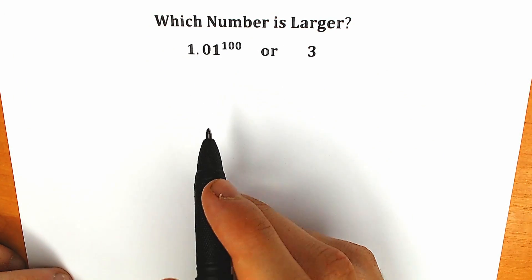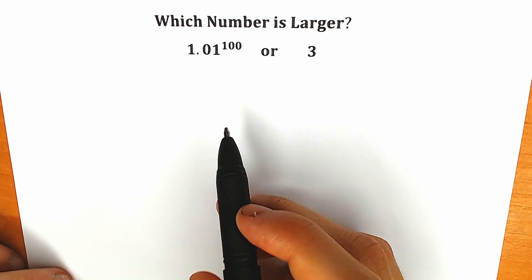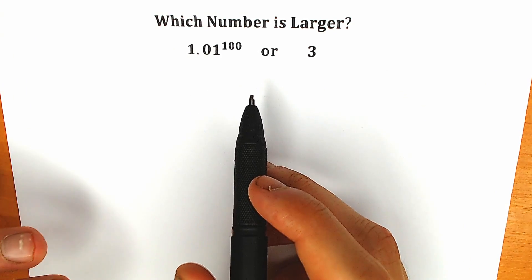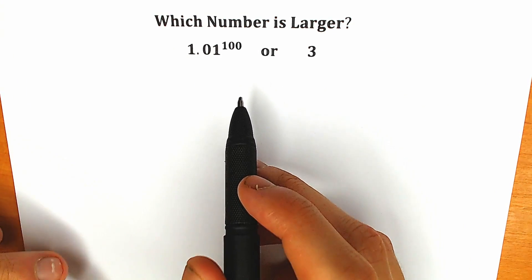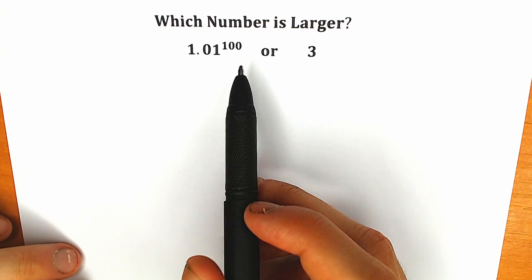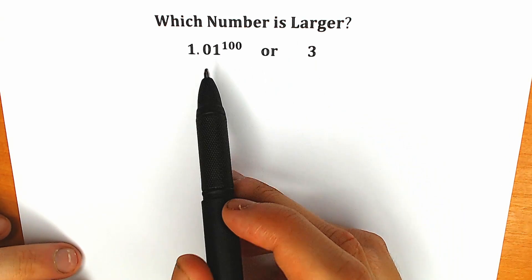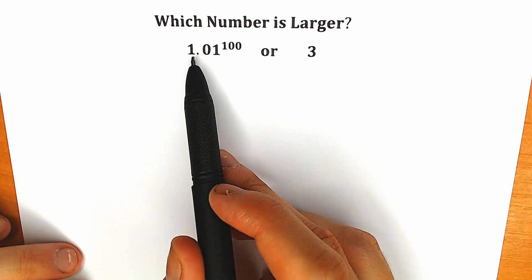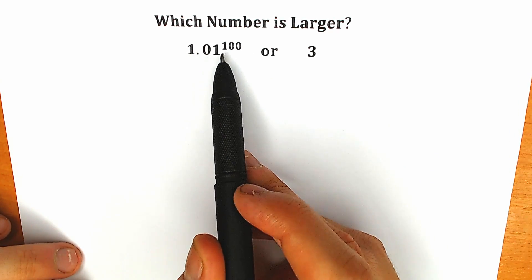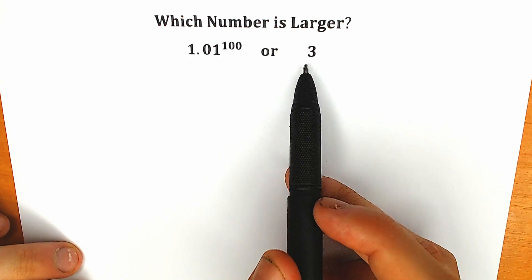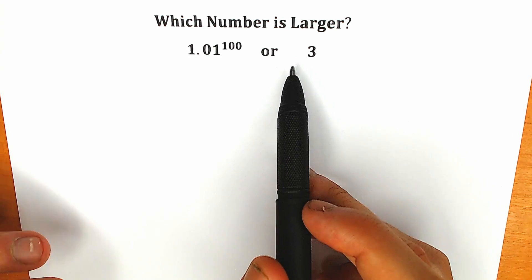Hello everyone! Happy to see you here! Welcome back to my channel Higher Mathematics. Today we have a very interesting and tricky question from an entrance examination. Which number is larger? On the left side we have 1.01 to the power 100, and on the right side we have 3.